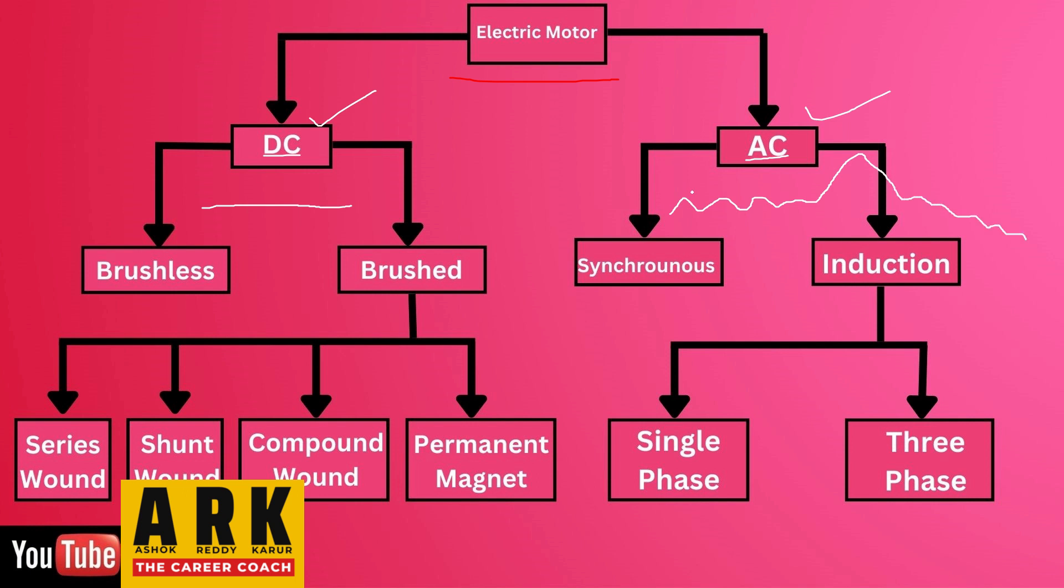So that is the meaning between the AC and DC. Under DC we will get the brushless motor, brushed motor, and under brushed motor we have series wound, shunt wound, compound wound and permanent magnet. So these are all the types of motors that come under DC current.